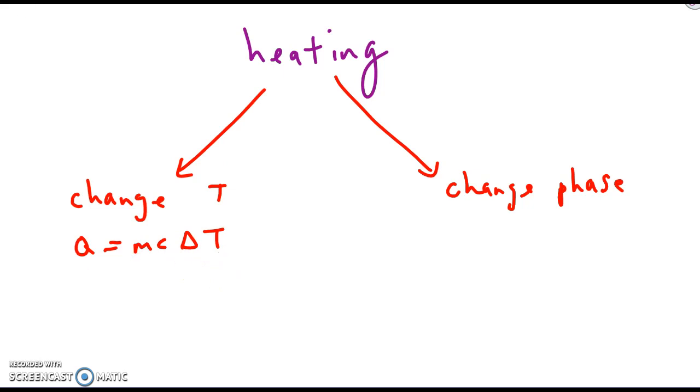When you change phase, the amount of heat is given by this equation. M is the mass, and L is the latent heat.